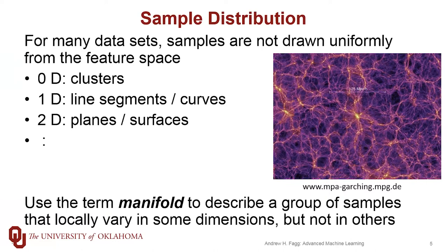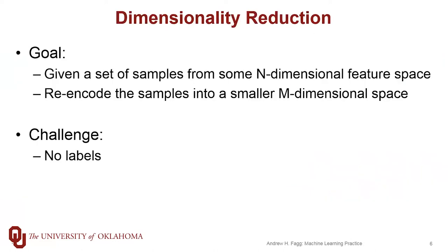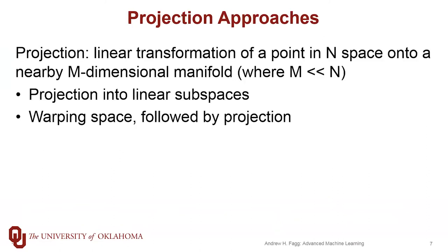So with dimensionality reduction, the idea is that we're going to start with a feature space that is n dimensional and a set of data that live within that feature space. Then we're going to re-encode these samples into some smaller m dimensional space, where m is a lot smaller than n. However, we're not going to do this re-encoding in an arbitrary way. We're actually going to do it in a way that preserves something meaningful about the spatial distribution of the points in our original n dimensional space — we're going to continue to capture that distribution in our smaller space. The challenge is that we actually don't have any labels; we only have a set of inputs. Mathematicians and machine learning theory types have been developing a whole variety of different ways to take this step of going from high dimensional to lower dimensional spaces.